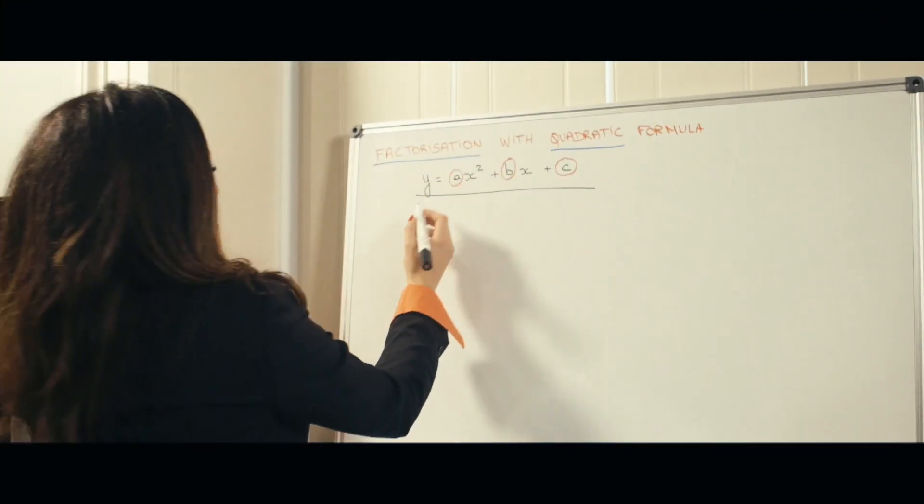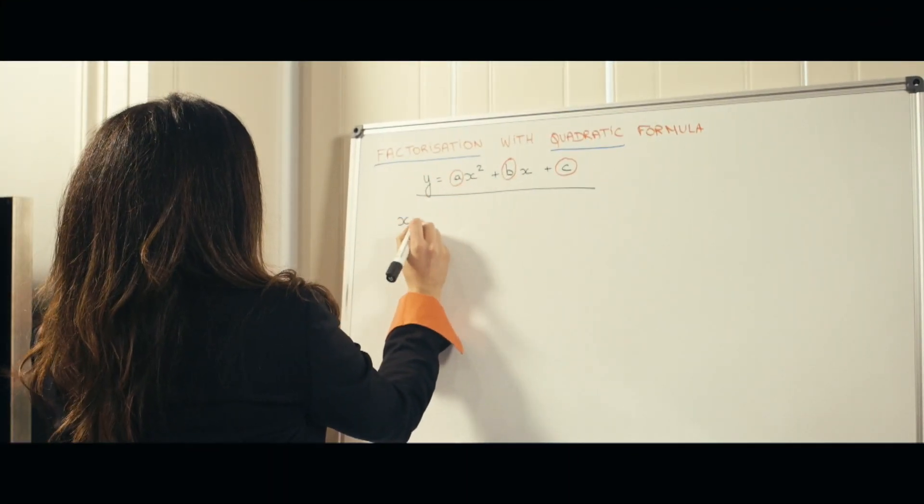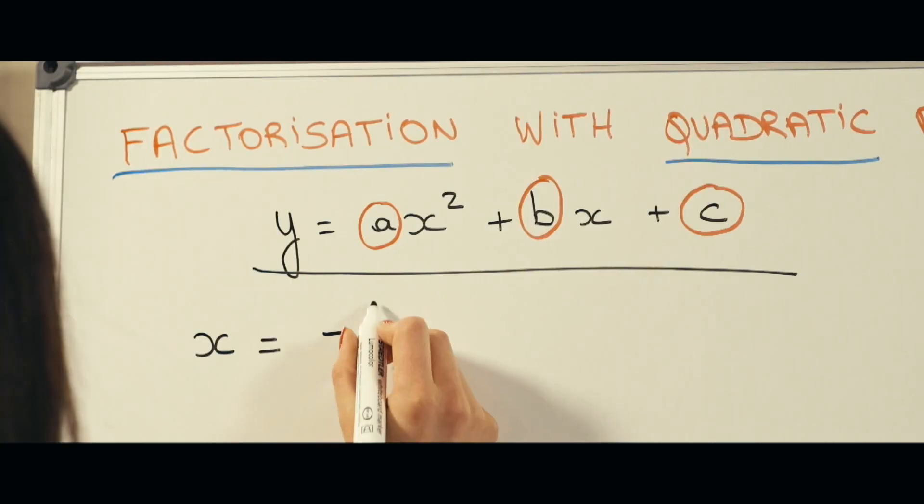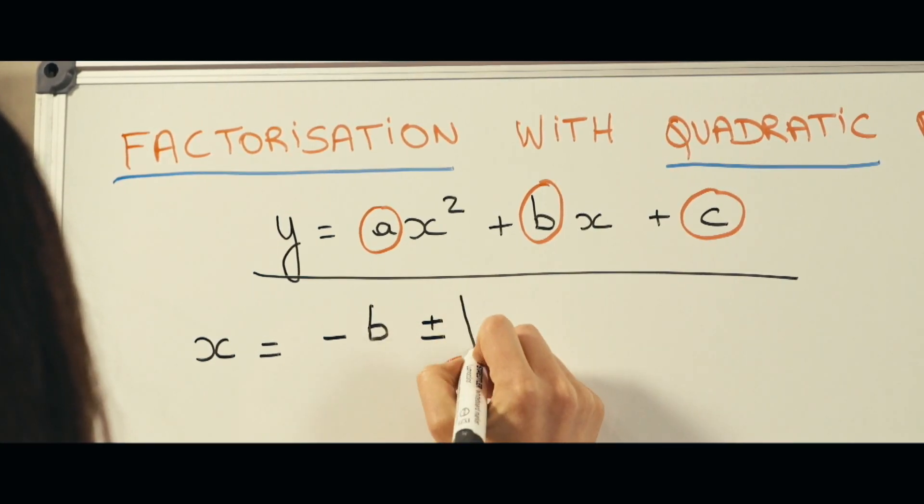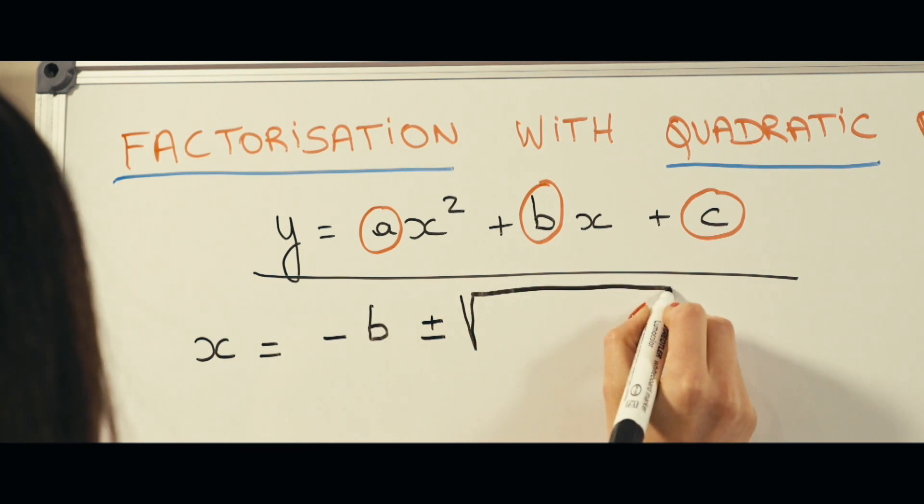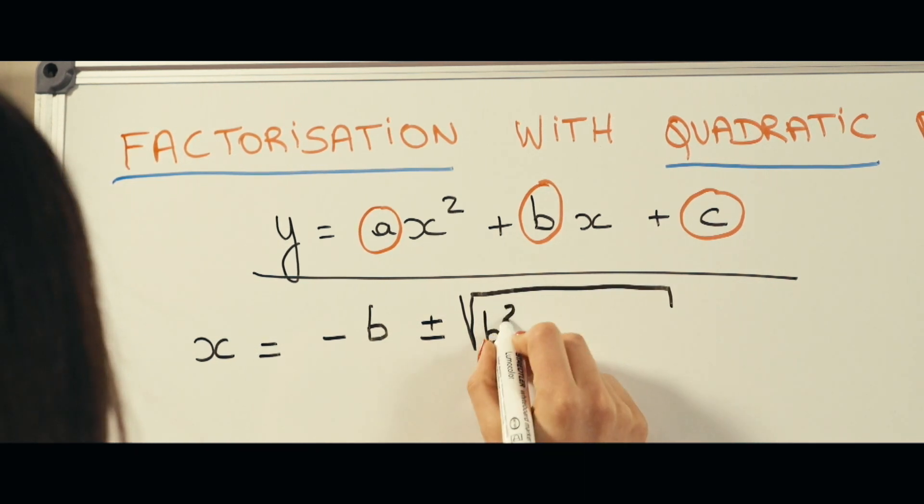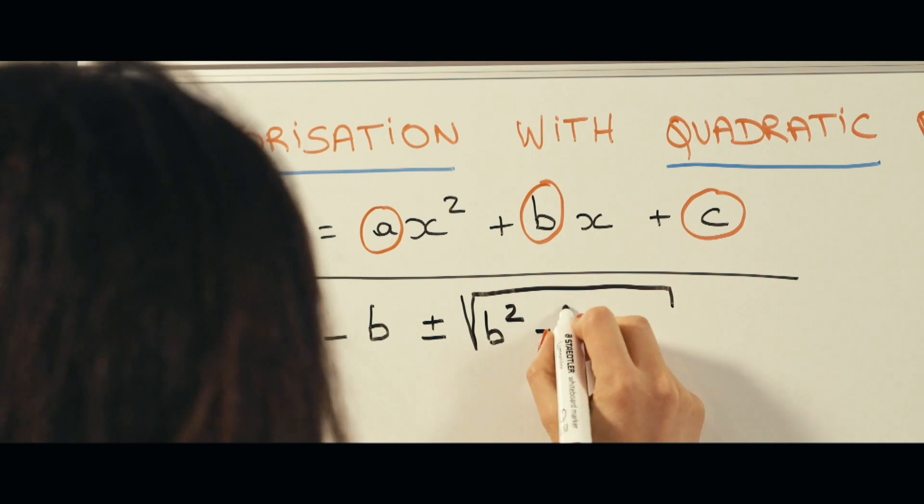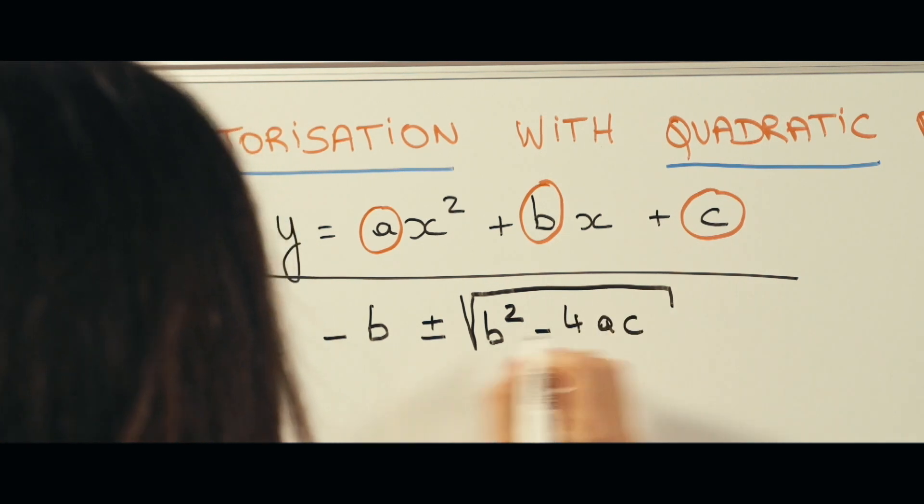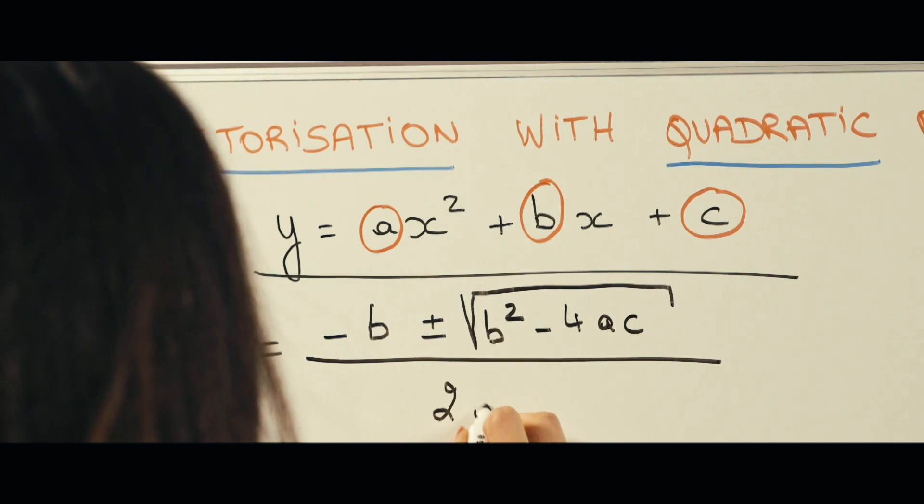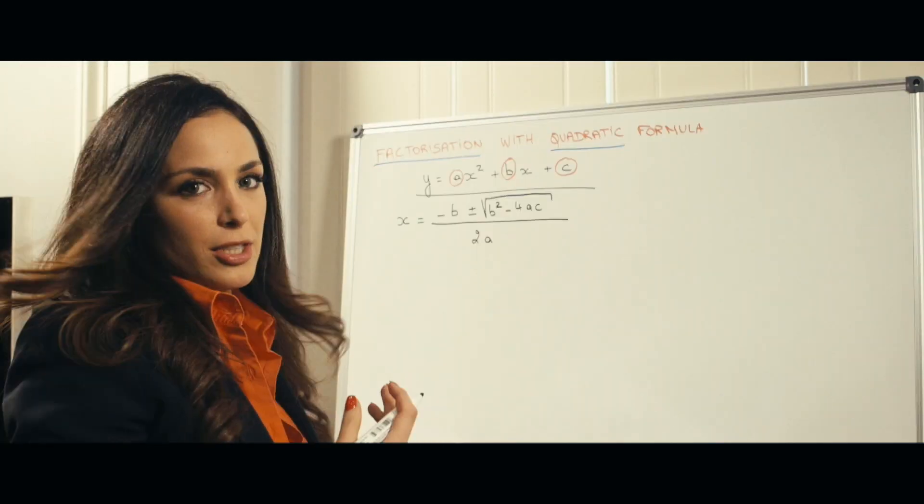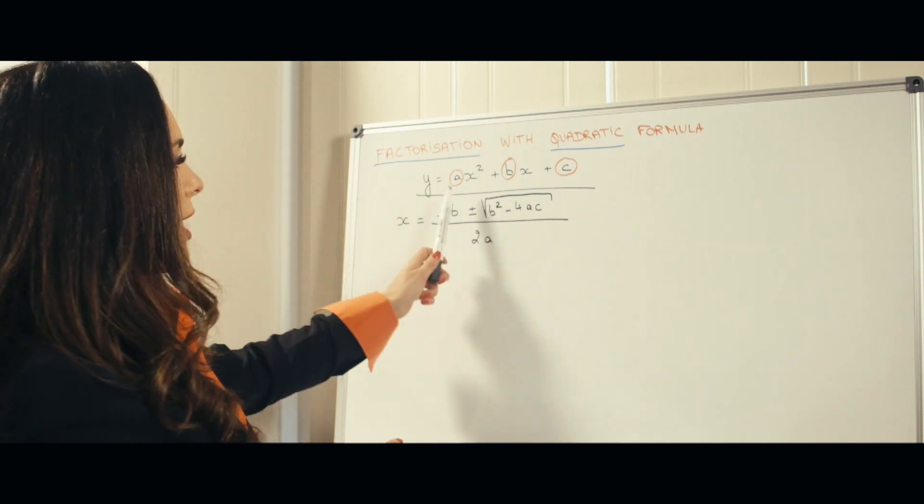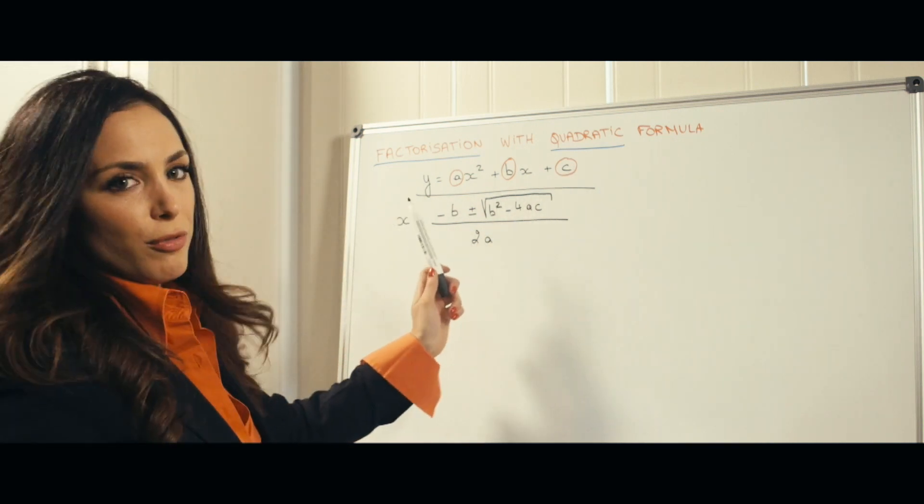The quadratic formula expression is x equals minus b plus or minus square root of b squared minus 4ac, divided everything by 2a. It does look scarier than it actually is, as long as you have a, b, c and you know the formula.